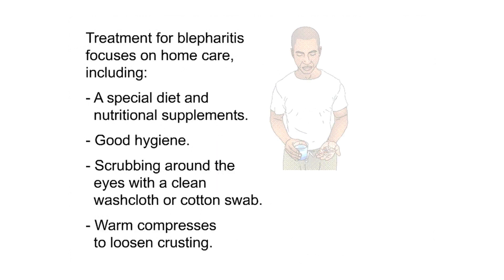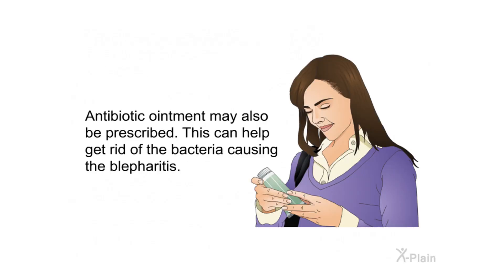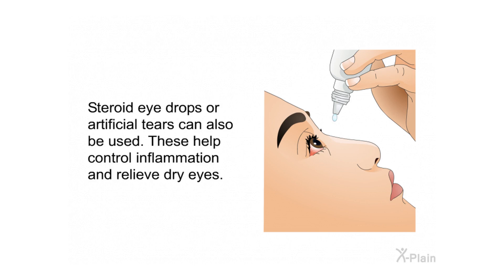Treatment for blepharitis focuses on home care, including a special diet and nutritional supplements, good hygiene, scrubbing around the eyes with a clean washcloth or cotton swab, and warm compresses to loosen crusting. Antibiotic ointment may also be prescribed to help get rid of bacteria causing the blepharitis. Steroid eye drops or artificial tears can also be used to control inflammation and relieve dry eyes.